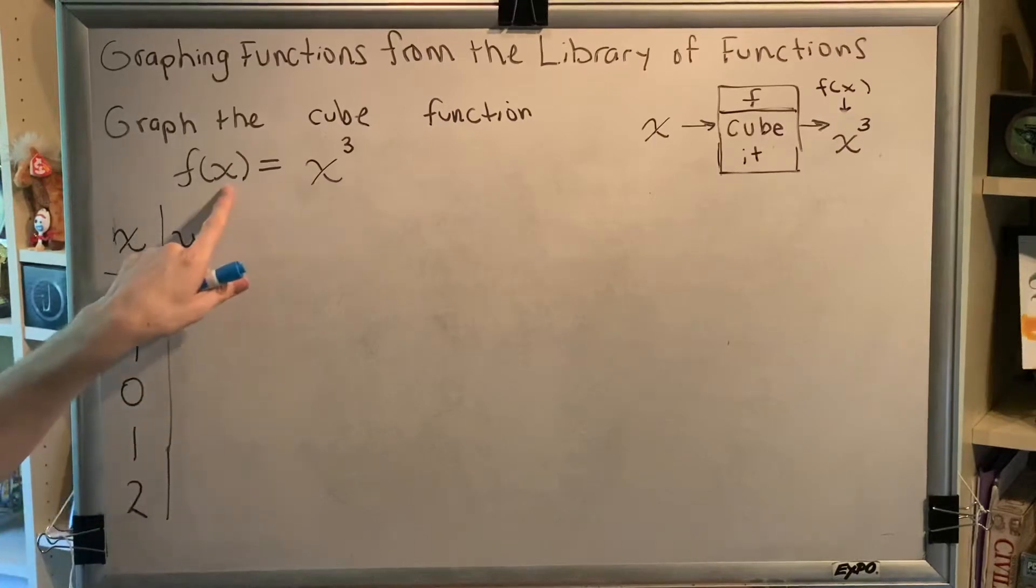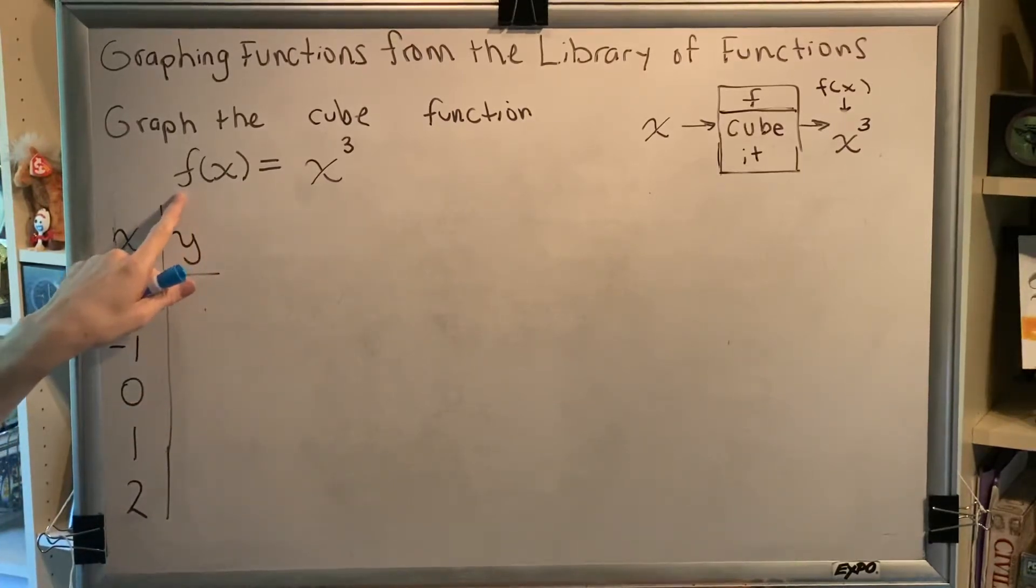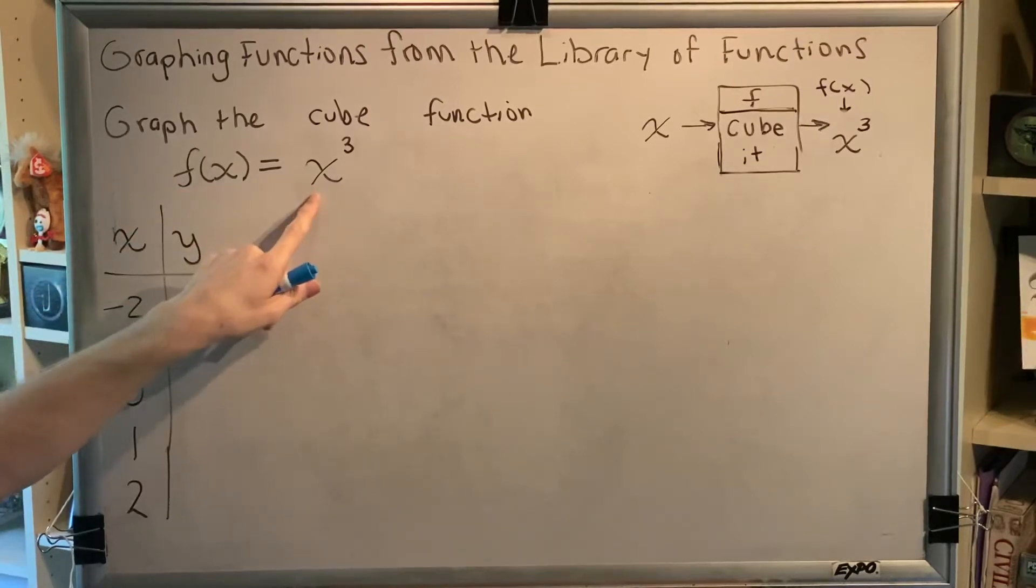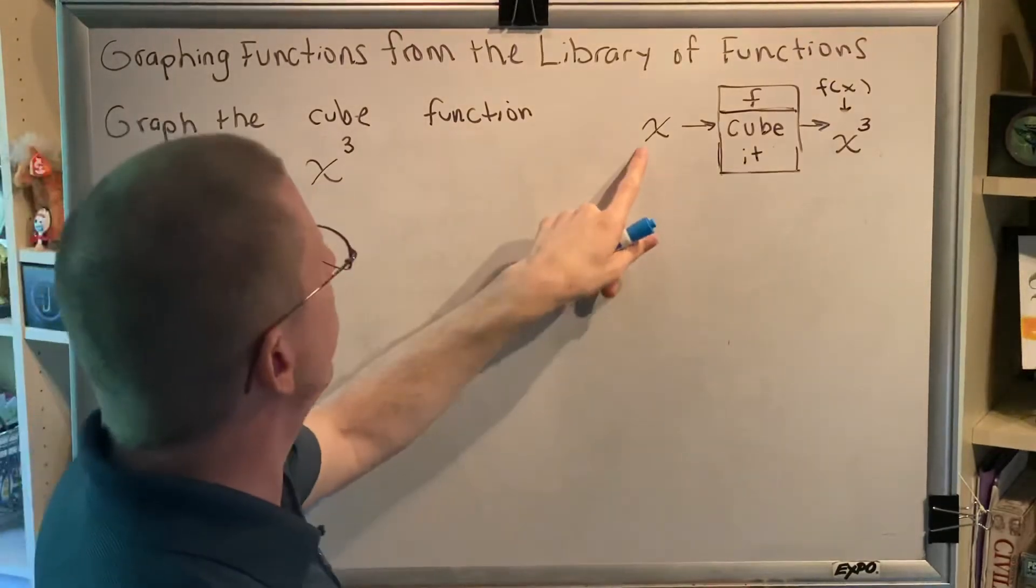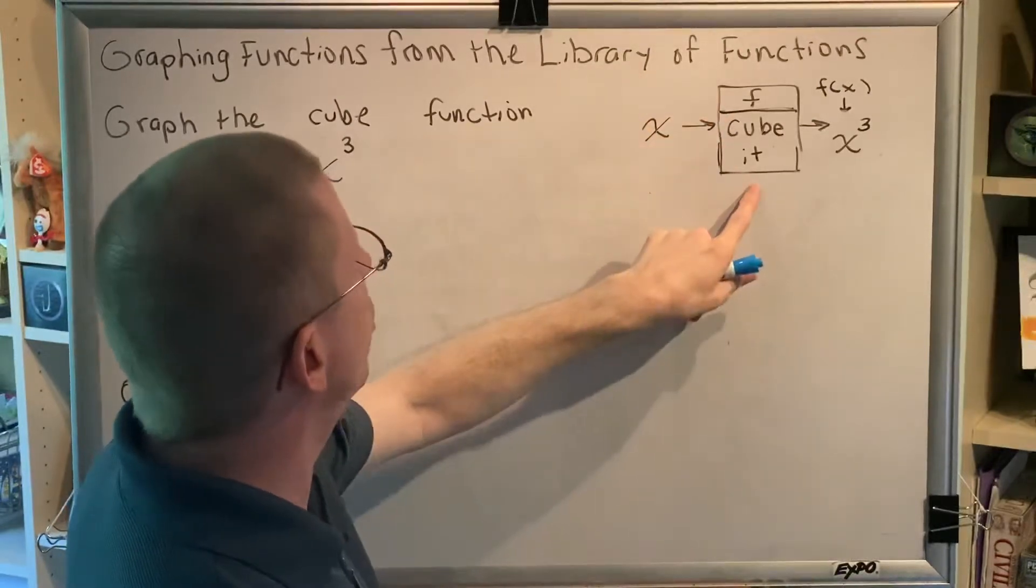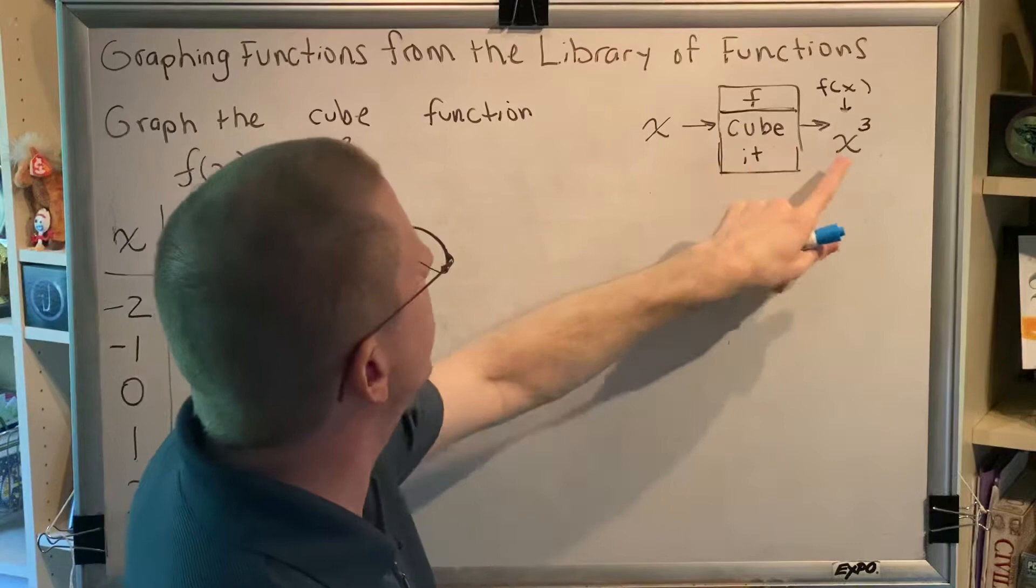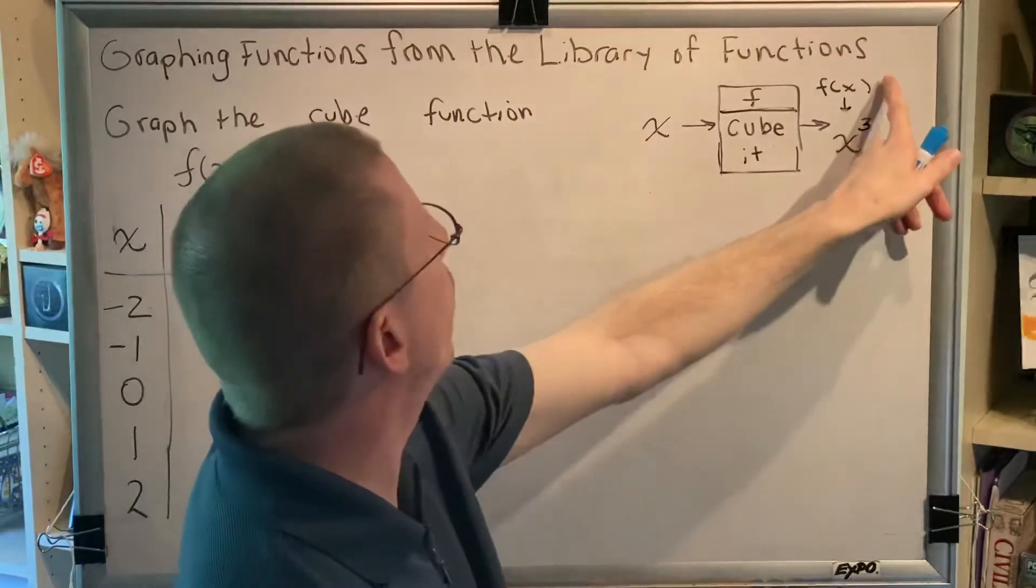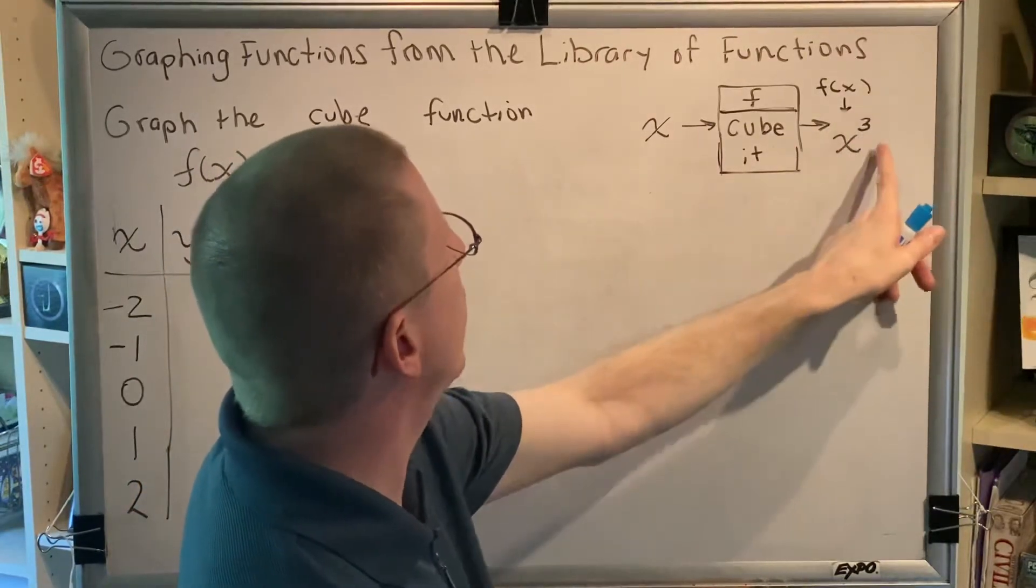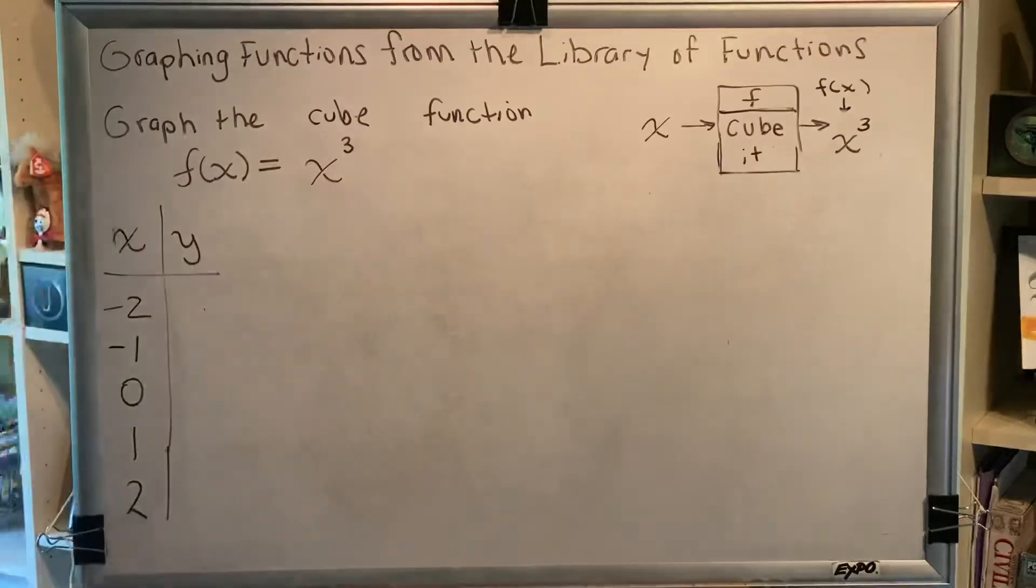Let's look at our diagram. x is the original input, it goes into a machine named f, and after following the instructions, what comes out is x cubed. So x goes into a machine named f. The instructions just say, cube it. So when x comes in and you cube it, what comes out is x cubed. So the thing that comes out, which is f of x, is x cubed. f of x equals x cubed.